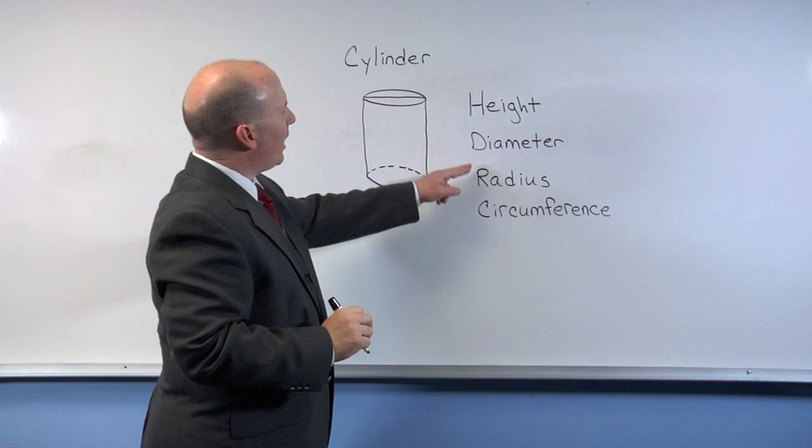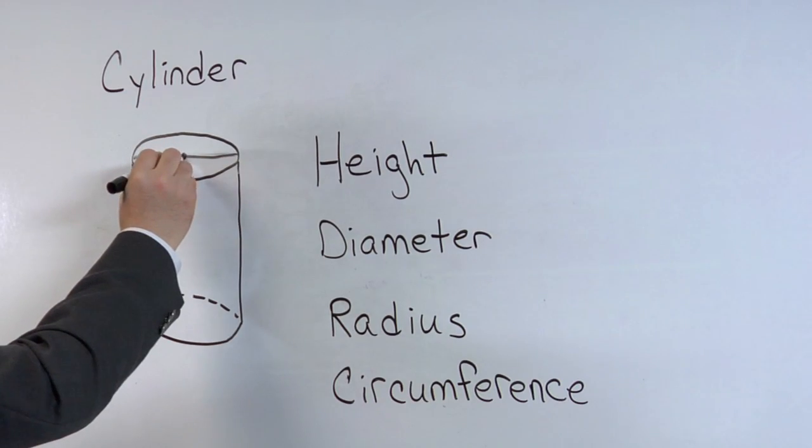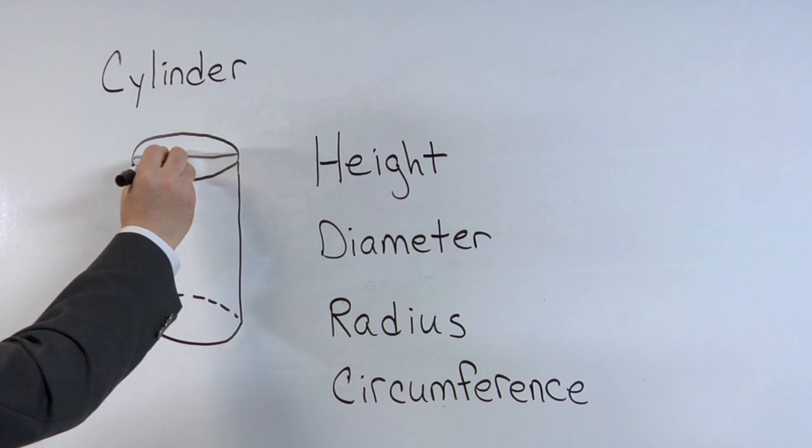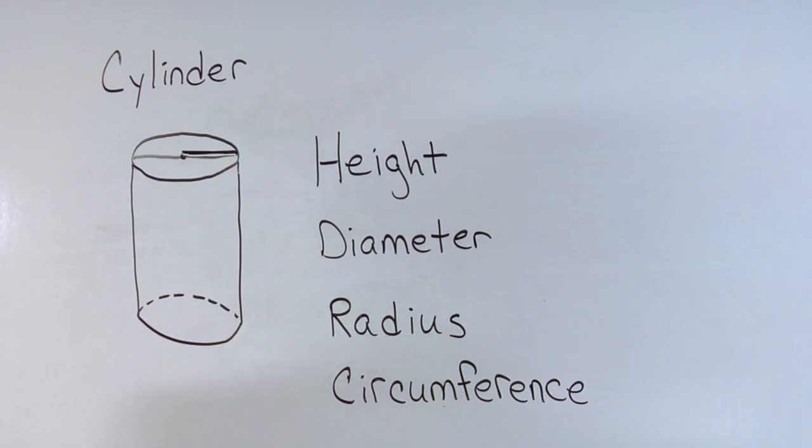Now comparing the diameter and the radius, if we stick a pin right down the middle of the can, this distance, which is half the diameter, is equal to the radius.